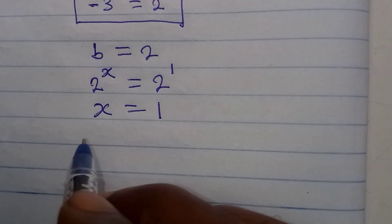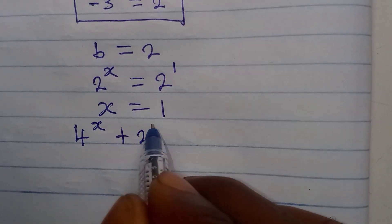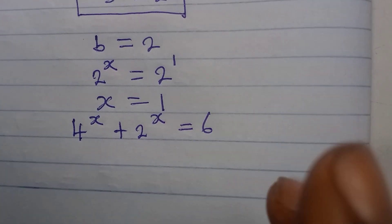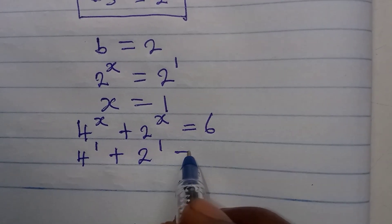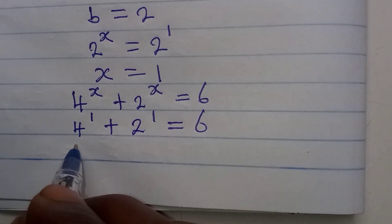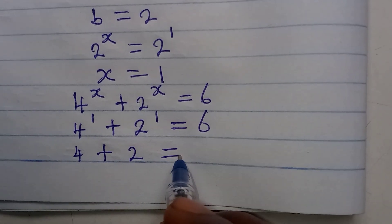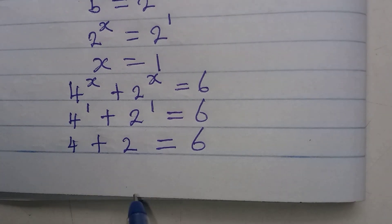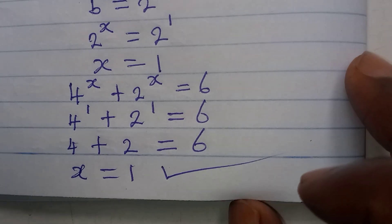Let's verify by substituting back into the original equation: 4 to the power of 1 plus 2 to the power of 1 equals 6. That is 4 plus 2, which is indeed 6. This confirms that x equals 1 satisfies the equation. Thank you for watching.